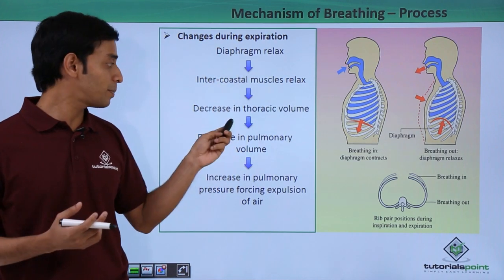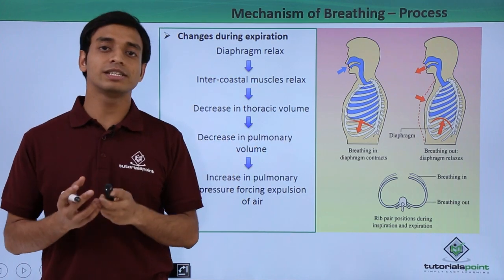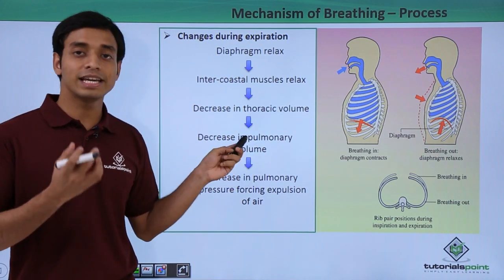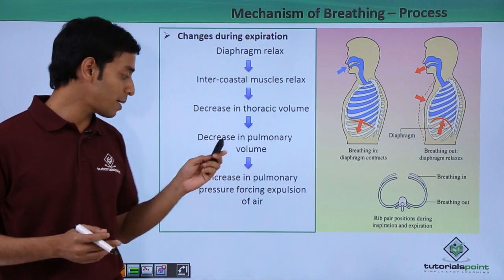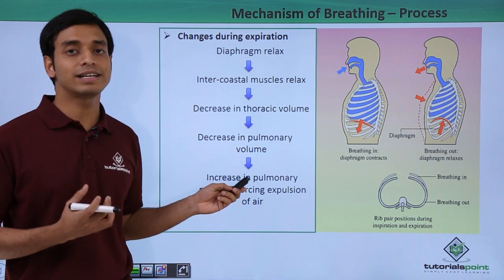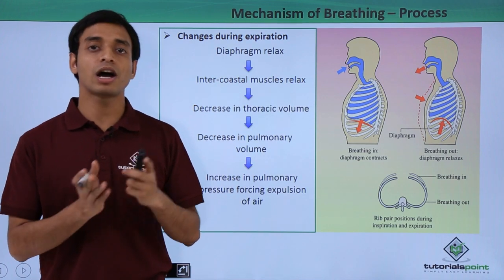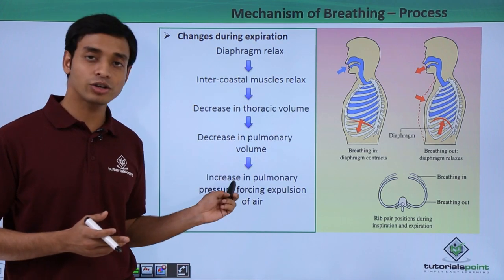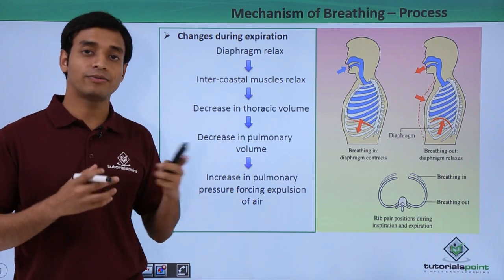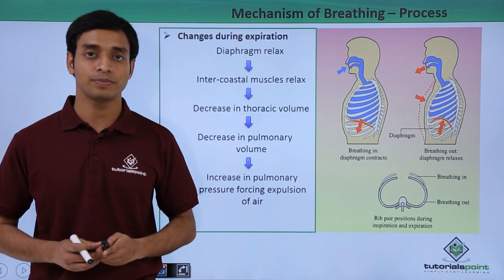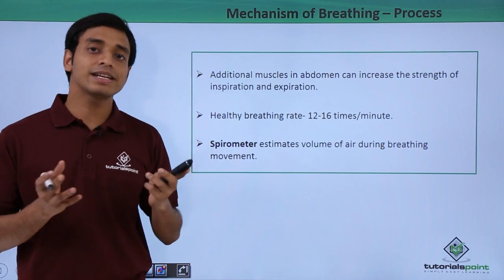Because of the relaxation of the intercostal muscles and diaphragm, the thoracic volume decreases. Due to this decrease in thoracic volume, the pulmonary volume also decreases. Because of this decrease in pulmonary volume, the pressure inside the pulmonary cavity increases much more than the pressure outside, which forces the foul air out of our lungs into the atmosphere.